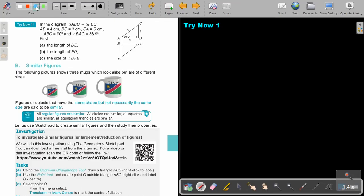In the diagram, they say triangle ABC is congruent to triangle FED. So, in this case, we are going to say AB equals FE. And we're going to say BC is ED. And we are going to say AC equals FD.